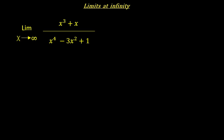Similarly, when we want to find out the value of a function at x equal to infinity, if we substitute, the numerator becomes an infinite value and the denominator is also an infinite value. This is an indeterminate form. So how do we find out the value of this function as x tends to infinity? This is what we learn in this video.